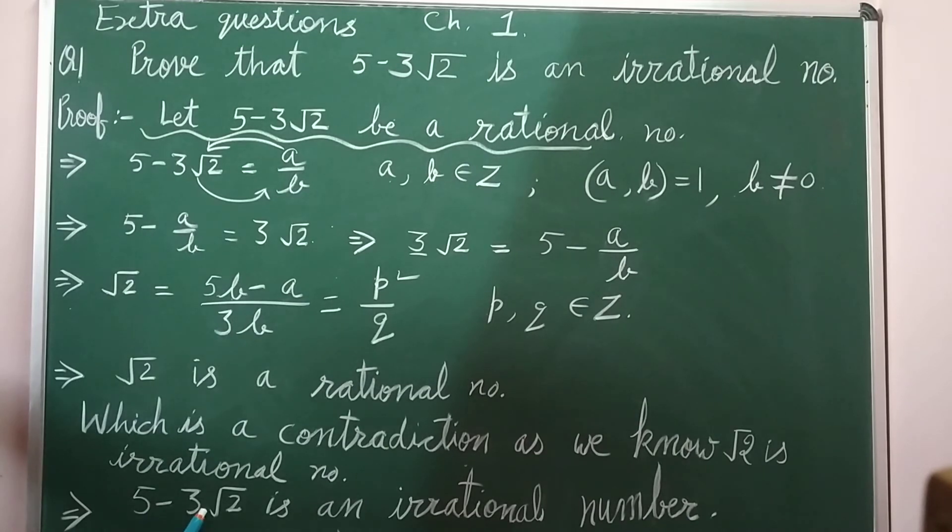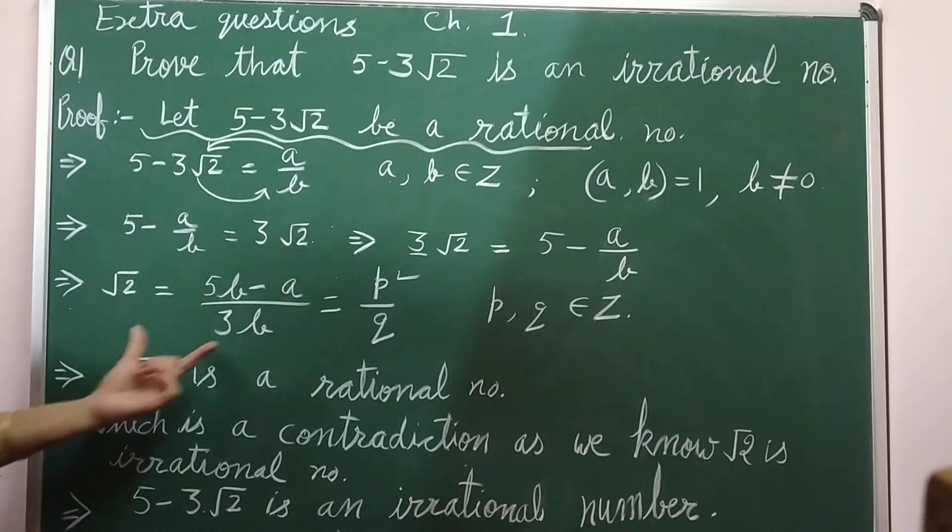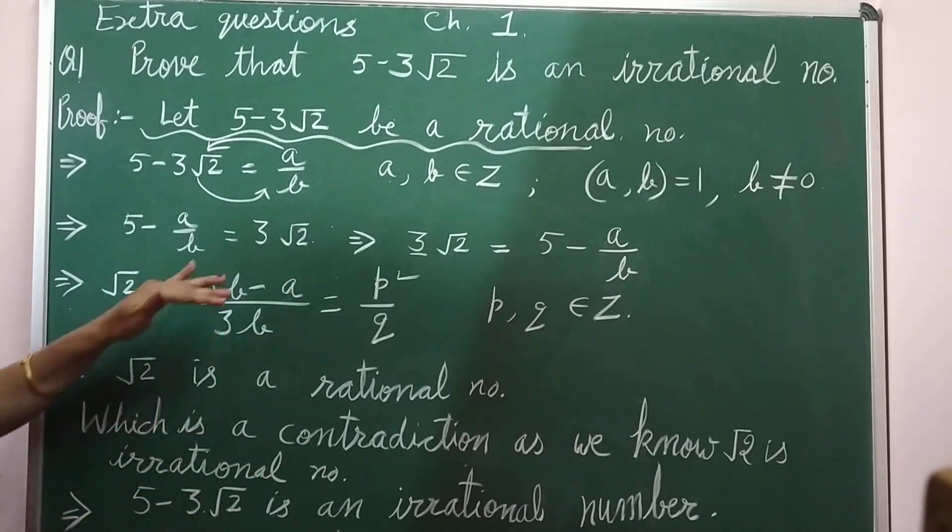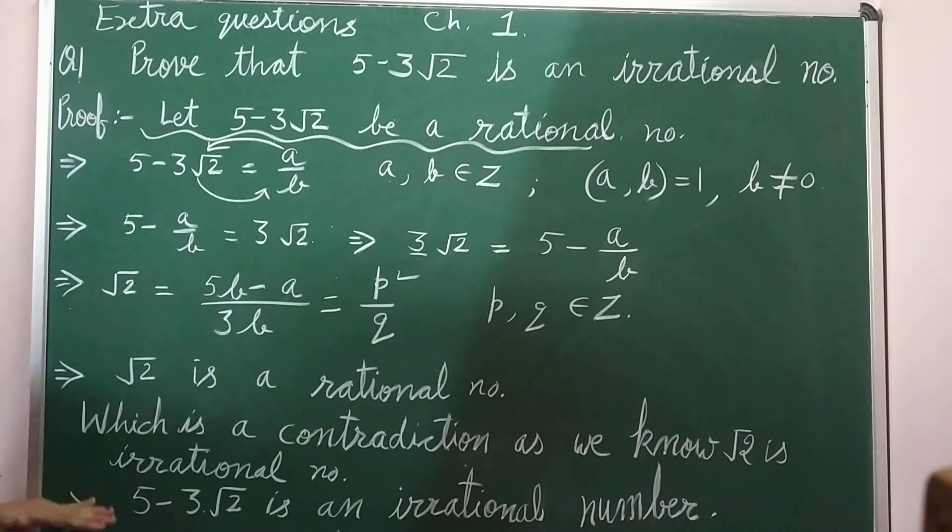Therefore, 5 minus 3 root 2 is an irrational number. Okay, if the same question comes in 4 marks, then here again we need to prove root 2 is an irrational number. Complete proof you have to give. If it is of 2 marks, then we will leave it up to here.